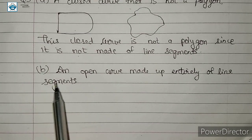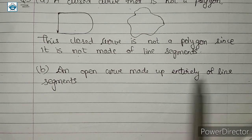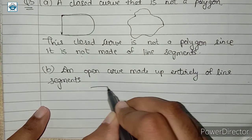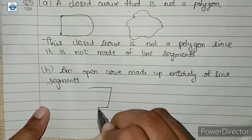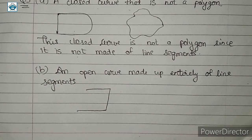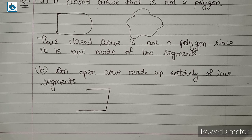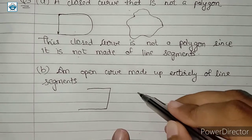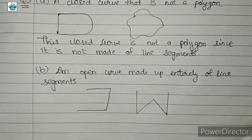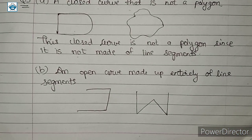Next, we have to draw an open curve made up entirely of line segments. It can simply be any figure made up of only line segments where the end points are different. This is an open curve made up only of line segments, and you can draw many more such figures.